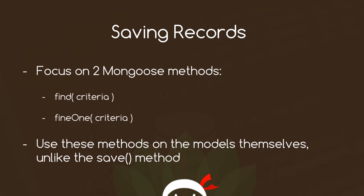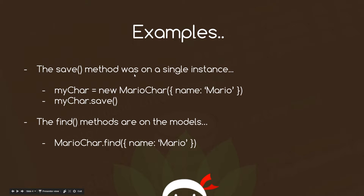Unlike the save method, we use find and findOne on the models themselves, not on an instance of the model. For example, the save method was used on a single instance — we'd say something like: myChar equals new MarioChar with a name of Mario, then take that instance and save it to the database. The find methods are used on the model itself, so we'd say MarioChar.find and then pass in the criteria to find every record with the name of Mario.